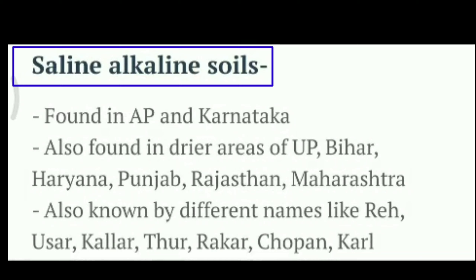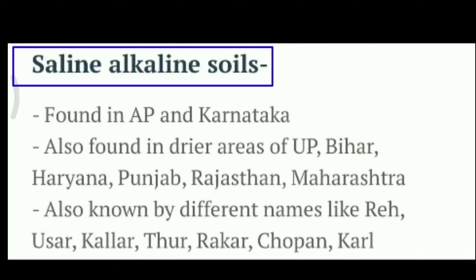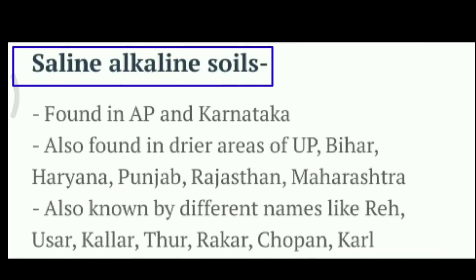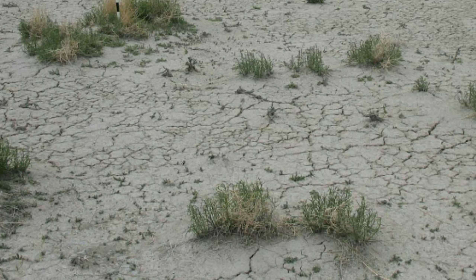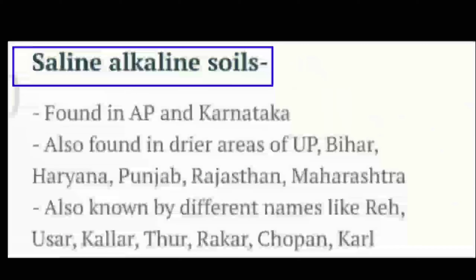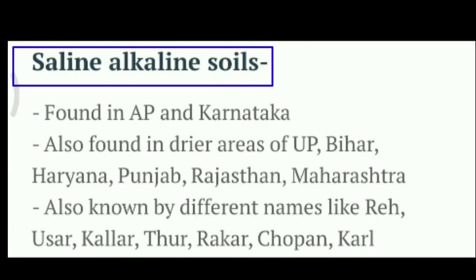Next is saline and alkaline soil. They are also known as usra soil, and all infertile soils come in the usra group. They lack nitrogen and calcium and have the highest amount of salt. That is why, as the name indicates, saline and alkaline soil is salty and not fertile.